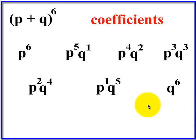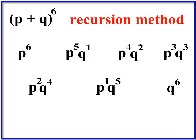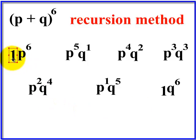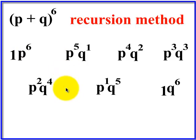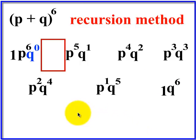We have to find the coefficients — that's the hardest part. There are three different methods. The first one is the recursion method, where we build a coefficient of each term by using the information about the coefficient of the term before it. The first coefficient is always one, and the last coefficient is always one. I'm going to put these coefficients in because there's an algorithm that involves them, and most of us forget that one is a factor of all numbers.